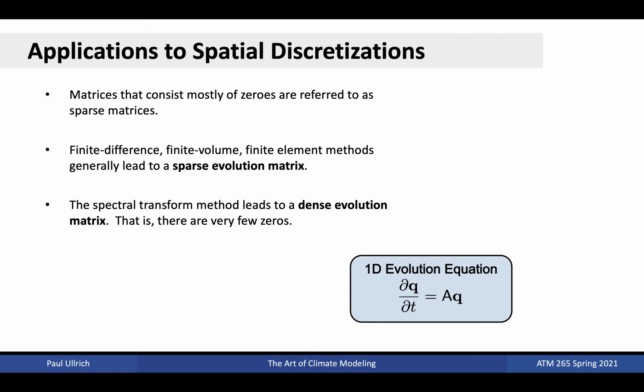These matrices that consist mostly of zeros are referred to as sparse matrices. In general, spatial discretizations that use local information, including finite difference, finite volume, and finite element methods, lead to sparse evolution matrices. Of the methods discussed, the only one that leads to a dense matrix is the spectral transform method, which, you might recall, is perfect for any linear differential equation. Thus, the more local methods can be thought of as sparse approximations to the spectral transform solution.